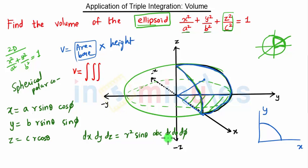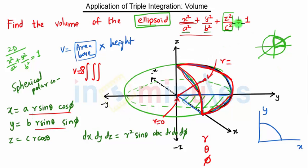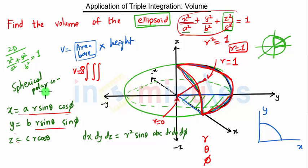The volume is the triple integral over this expression. Since we are finding limits for only one octant, we multiply the result by eight. The variable r goes from 0 to 1, because when we substitute x, y, z into the ellipsoid equation, we get r² = 1, so r = 1 — the equation of the ellipsoid in spherical polar coordinates.